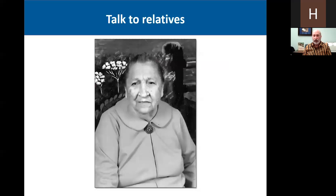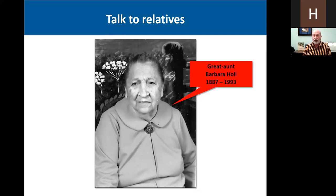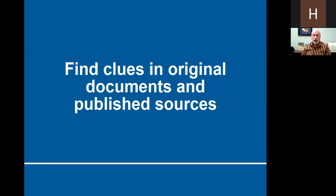This is a photograph of my great-aunt Barbara Hall. She died in 1993 at the age of 105 and she knew absolutely everything about the family history. Her father is the one that immigrated to this country and she knew the whole story, so she had a lot of information.